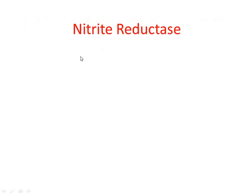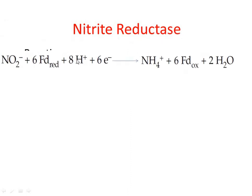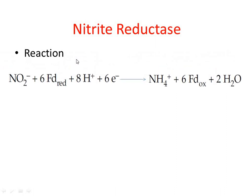The second step is the reduction of nitrite to ammonium. Nitrite is a highly reactive, potentially toxic ion. Plants immediately transport nitrite generated by nitrate reduction from the cytosol into chloroplasts in leaves and plastids in roots. There, the enzyme nitrite reductase reduces nitrite to ammonium: NO₂⁻ + 6 ferredoxin(reduced) + 8H⁺ + 6e⁻ → NH₄⁺ + 6 ferredoxin(oxidized) + 2H₂O.